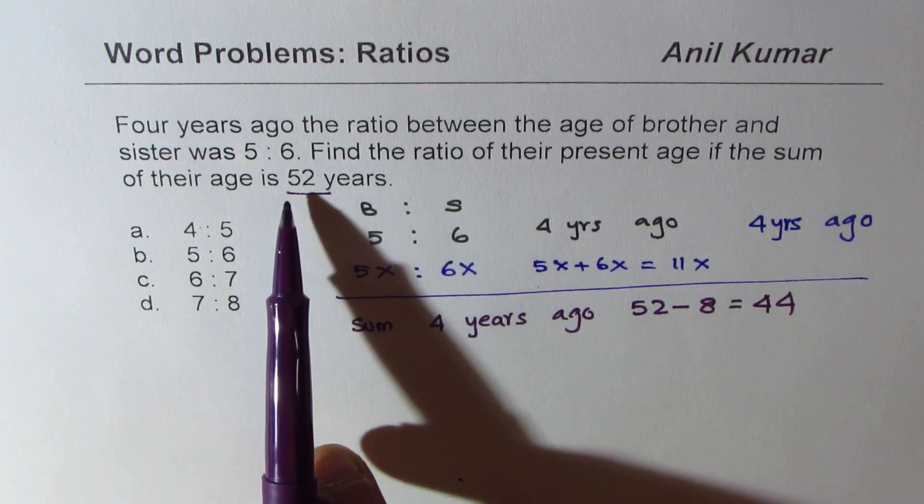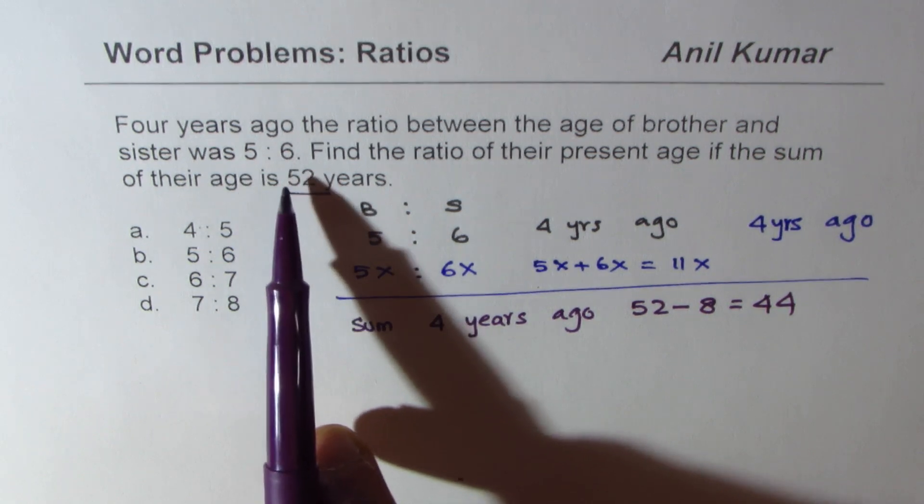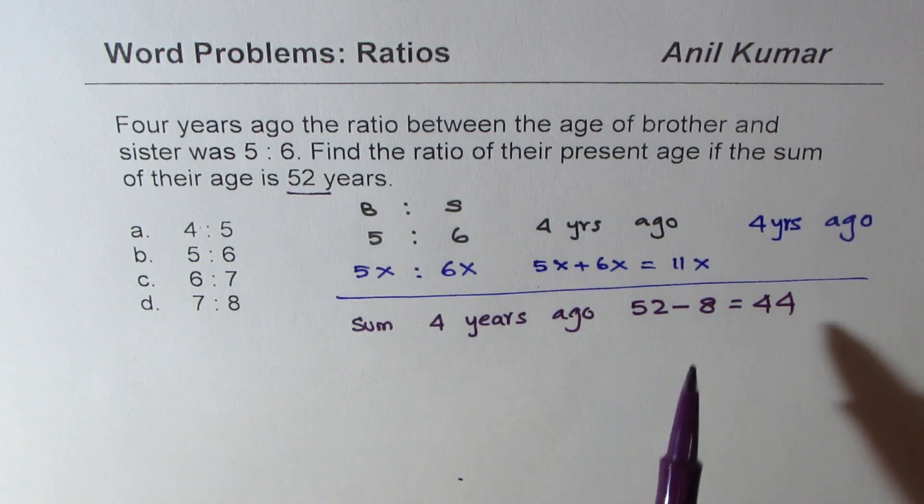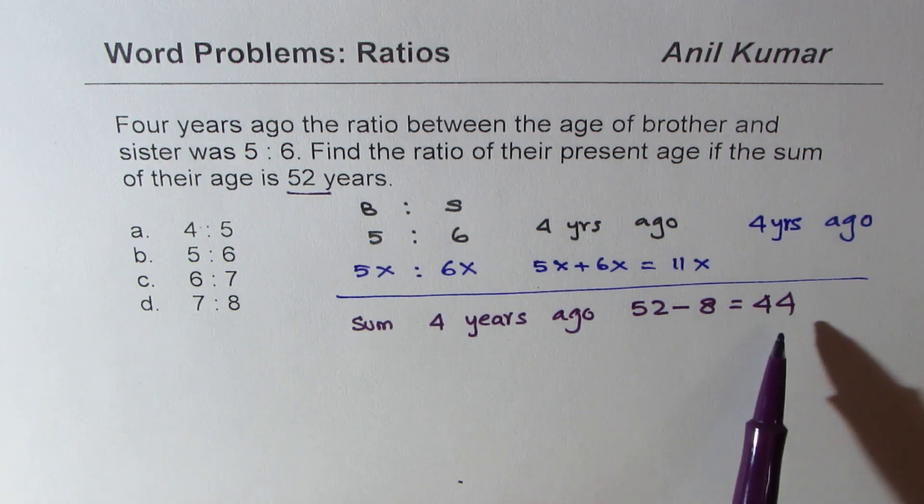So when you are given sum of their ages for current time, that is present, four years back both of them will be four years younger, right. So their sum will be not 52 but 52 minus 8 which is 44.